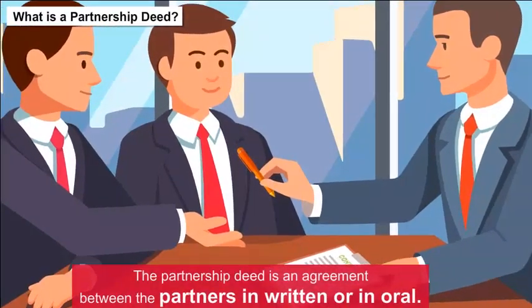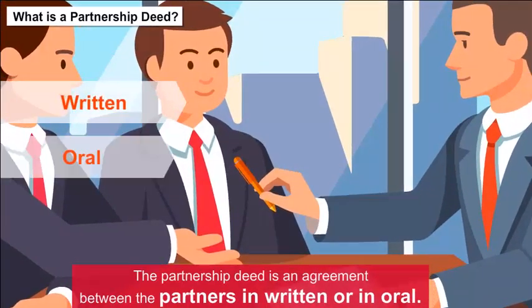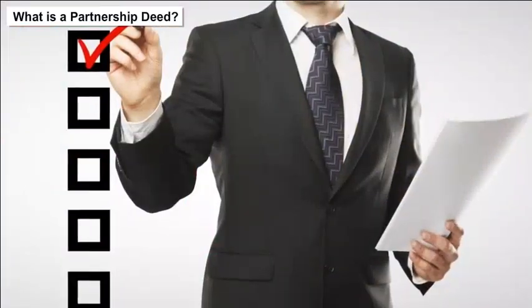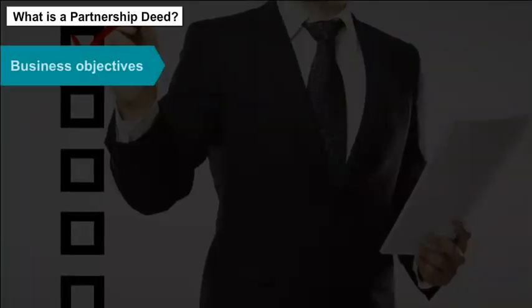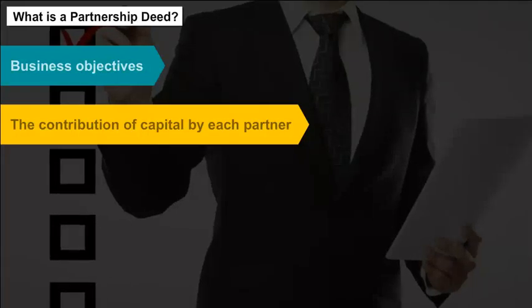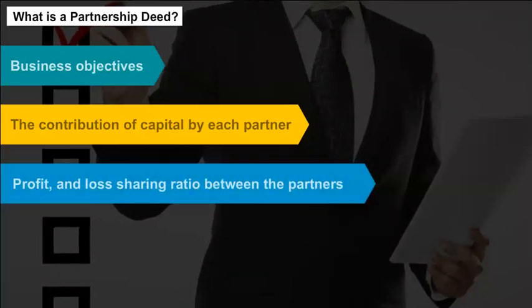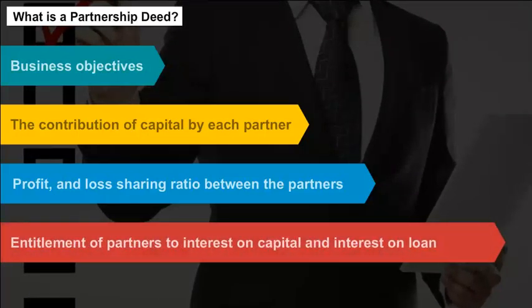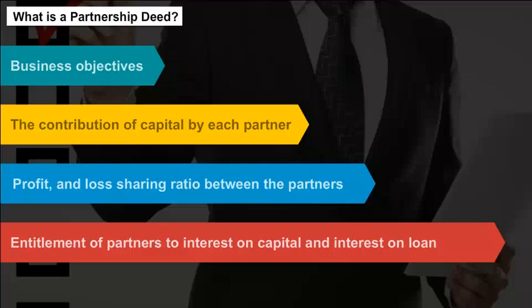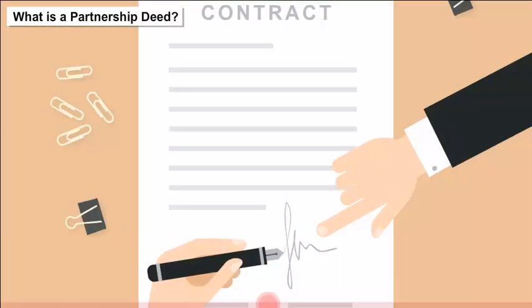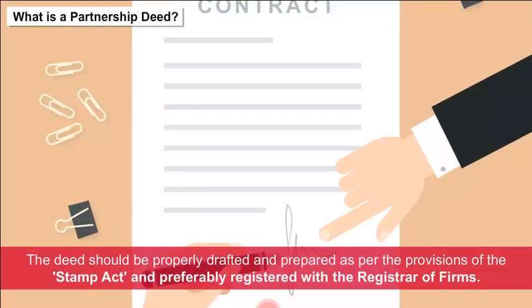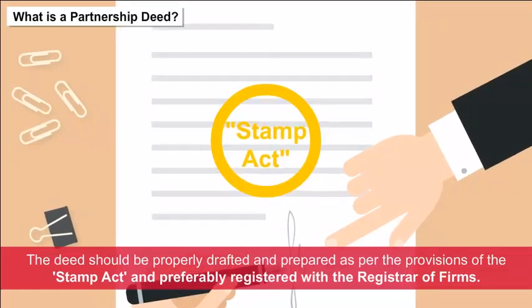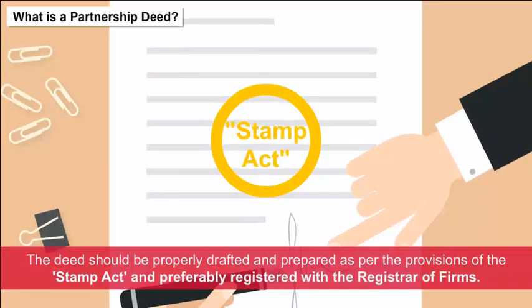What is a Partnership Deed? The partnership deed is an agreement between the partners, written or oral, containing the terms of the agreement. It contains all details about the business objectives, the contribution of capital by each partner, profit and loss sharing ratio between the partners, and entitlement of partners to interest on capital and interest on loan. The deed should be properly drafted and prepared as per the provisions of the Stamp Act, and preferably registered with the registrar of firms.